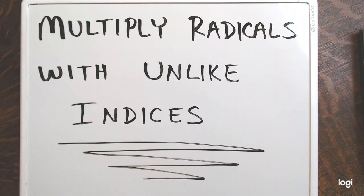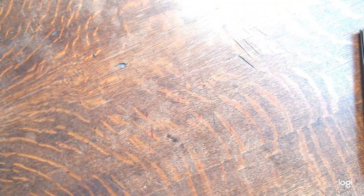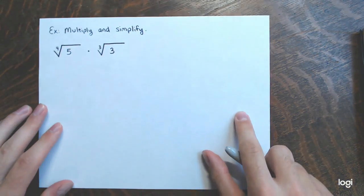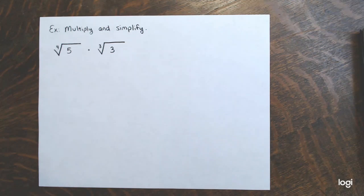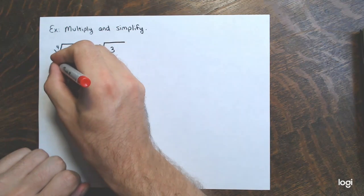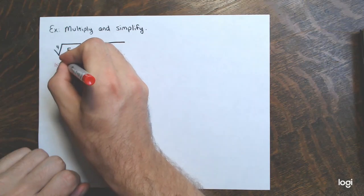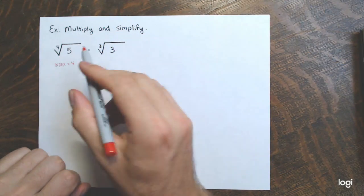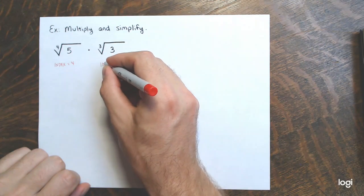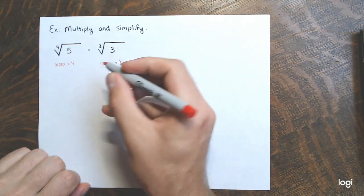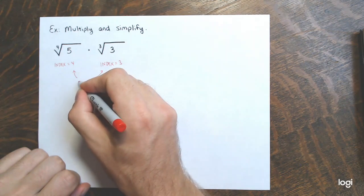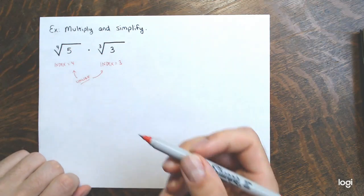I'm going to point out that in this case you cannot use the product rule — the product property that we've seen in a couple of videos prior to this. I just have a couple of examples, both involving two radicals with different indices. This example here has the fourth root of 5, where the index is 4, times the cube root of 3, where the index is 3. These are unlike indices — they're not the same.